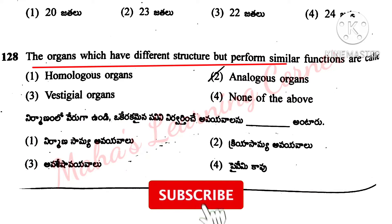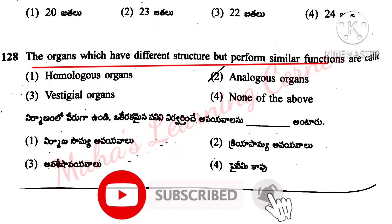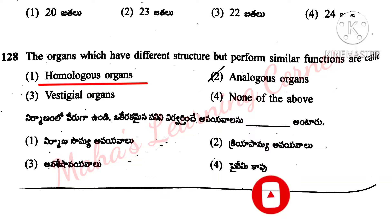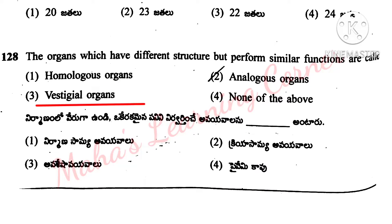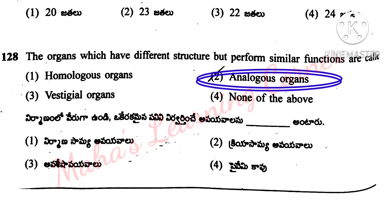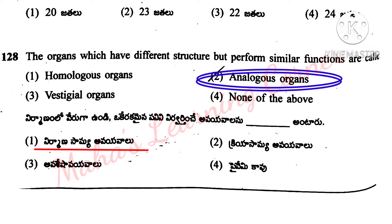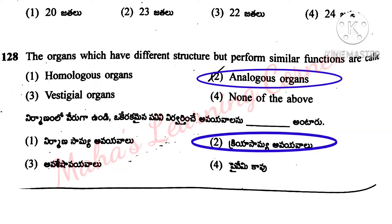The organs which have different structure but perform similar functions are called: homologous organs, analogous organs, vestigial organs, none of the above. Correct answer is option 2: analogous organs.